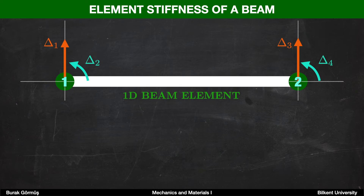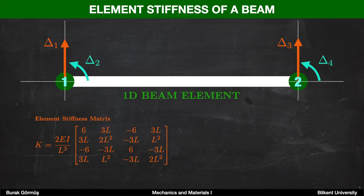In short, in order to express the stiffness of a beam element we need a 4×4 matrix, because we have four unknowns in total for an element. You can see the stiffness matrix here, and as you can observe, it is dependent on Young's modulus, moment of inertia, and element length.